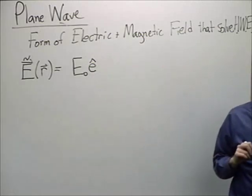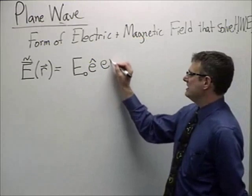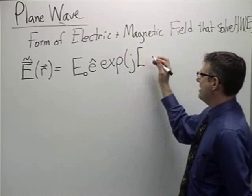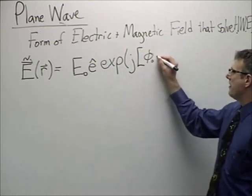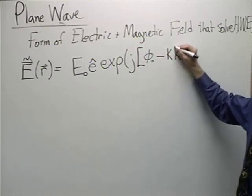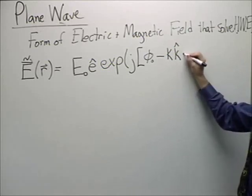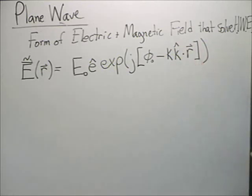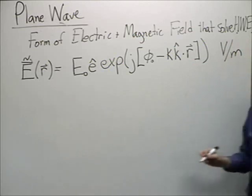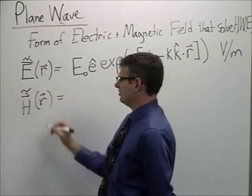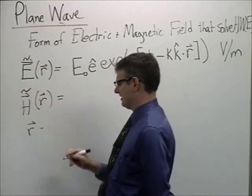It's got to have an amplitude, E naught. It must have a unit vector with a polarization, E hat, little E hat. It must have an EXPJ, and there is going to be some sort of phase, phi naught, minus wave number, k-unit vector dotted into R, my position vector. This has units, of course, of volts per meter. So let me go ahead before I write the H field solution and unpack all the variables that I used here. It's really not that complicated, but there's just a lot of stuff floating around.